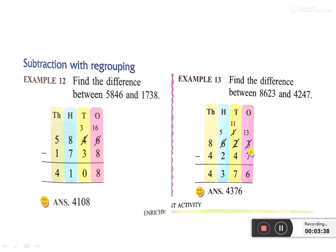Can you subtract 7 from 3? No, because 3 is smaller. So we borrow 1 ten from the neighbor: the tens digit 2 becomes 1, and 3 becomes 13. 13 minus 7 is 6. Now at the tens place, 1 minus 4 — we cannot do this, so we borrow again: the hundreds digit 6 becomes 5, and 1 becomes 11. 11 minus 4 is 7. 5 minus 2 is 3. 8 minus 4 is 4. Answer is 4376.